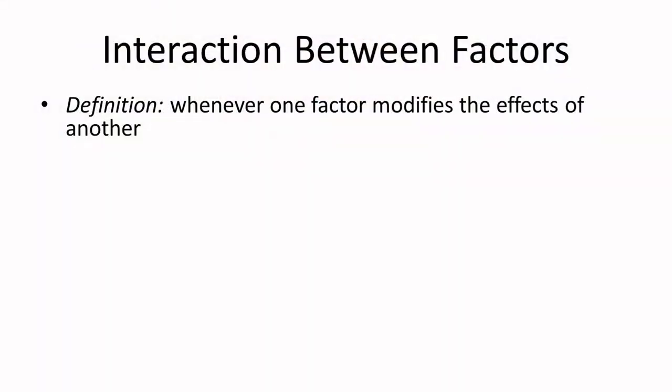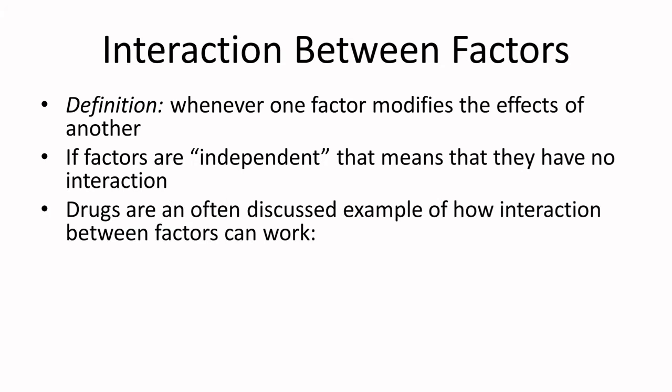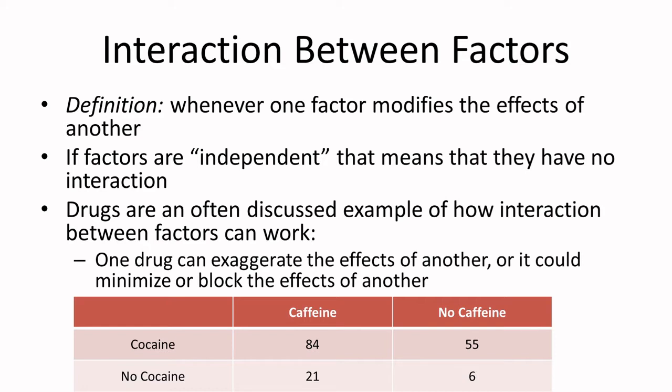Those results we refer to as interactions. An interaction between factors can be simply defined as whenever one factor modifies the effects of another. We would call the factors independent if they don't have an interaction. A common example of interactions between factors is drugs — if you've ever seen a drug commercial, they talk about how you shouldn't take a drug if you take certain other drugs because they could interact and their effects could combine in potentially harmful ways. One drug could exaggerate the effects of another, or minimize or block the effects of the other.